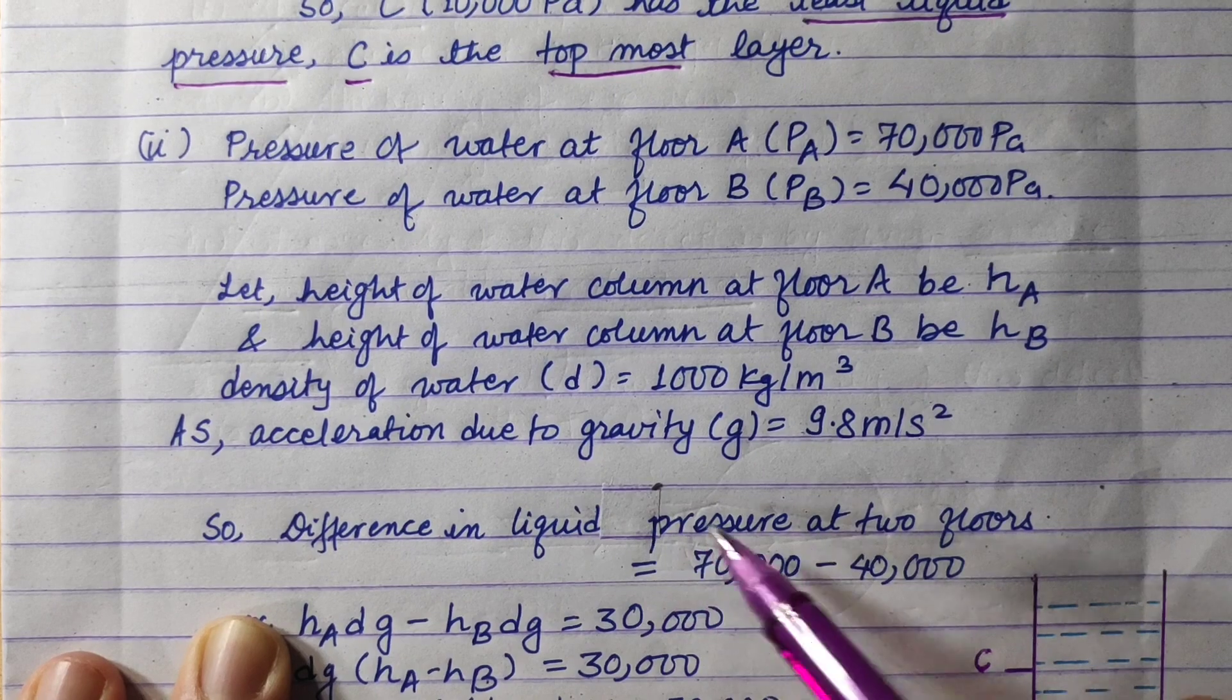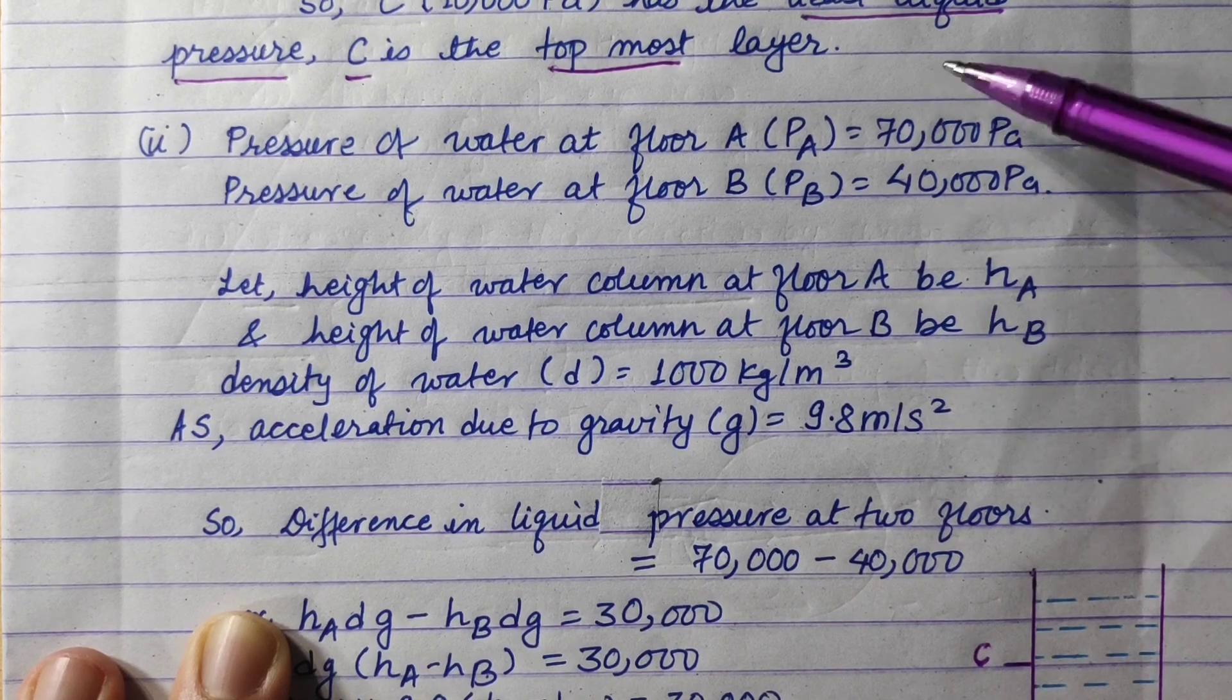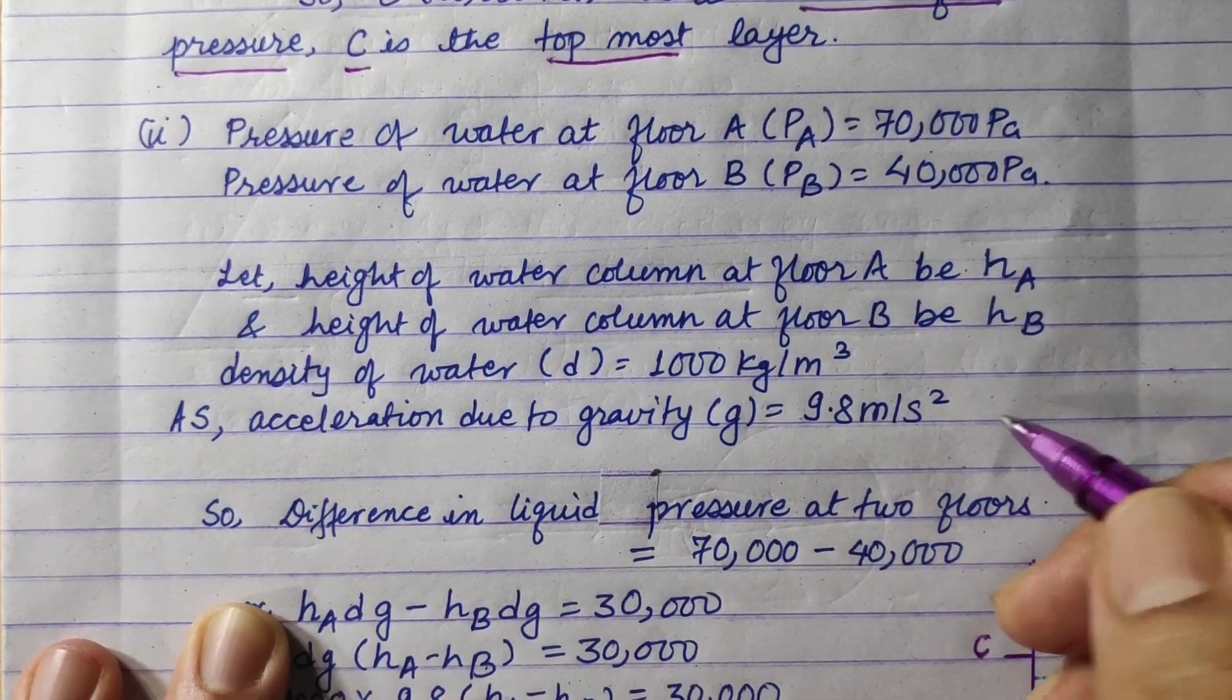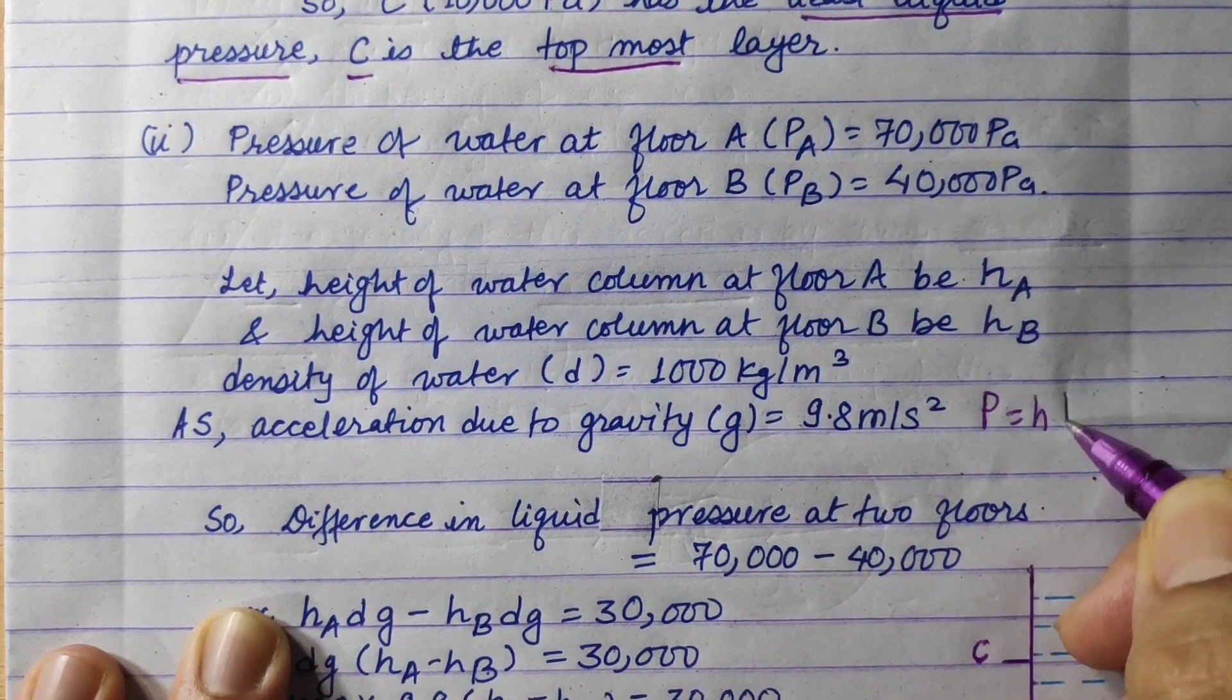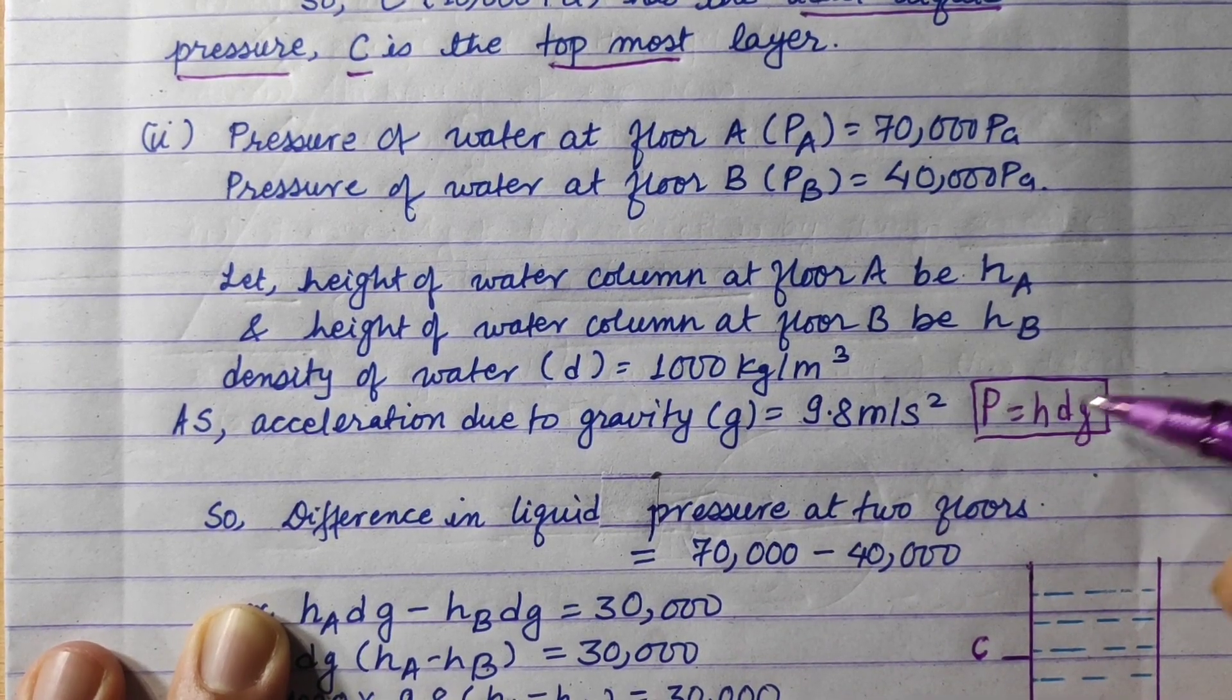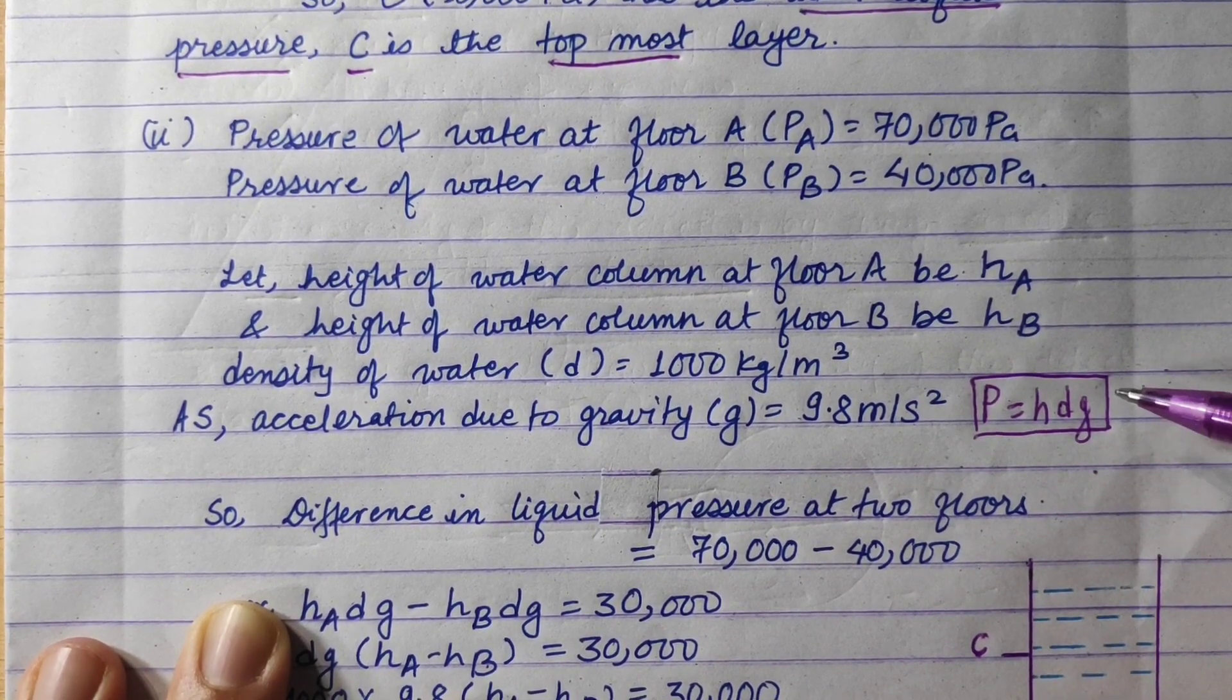So, difference in liquid pressure at two floors would be 70,000 minus 40,000. We have the liquid pressure formula hdg, where h is height of liquid column, d is density of the liquid, g is acceleration due to gravity, and p is liquid pressure.